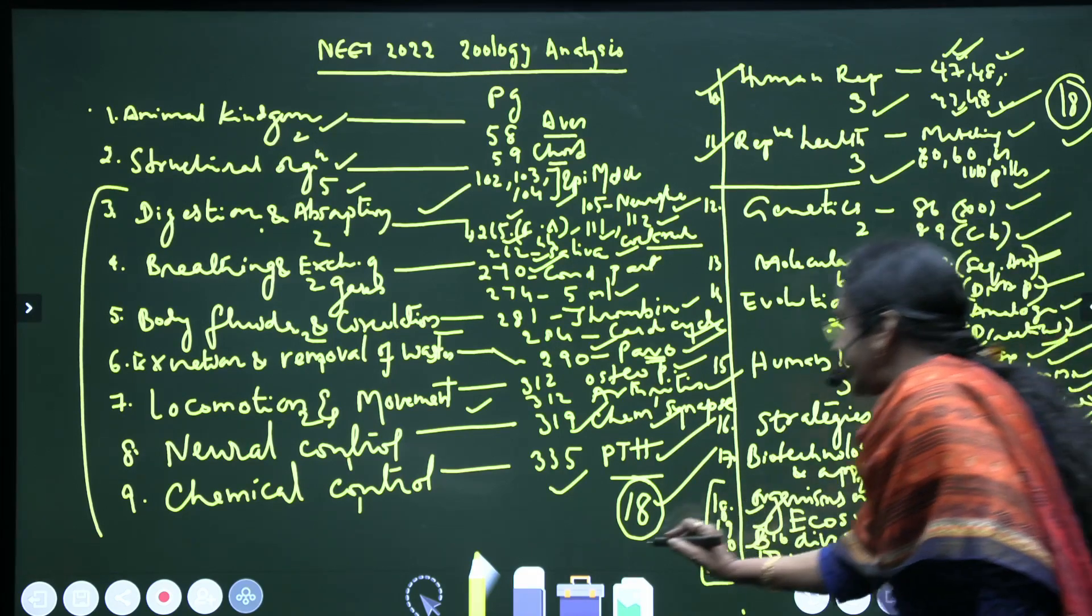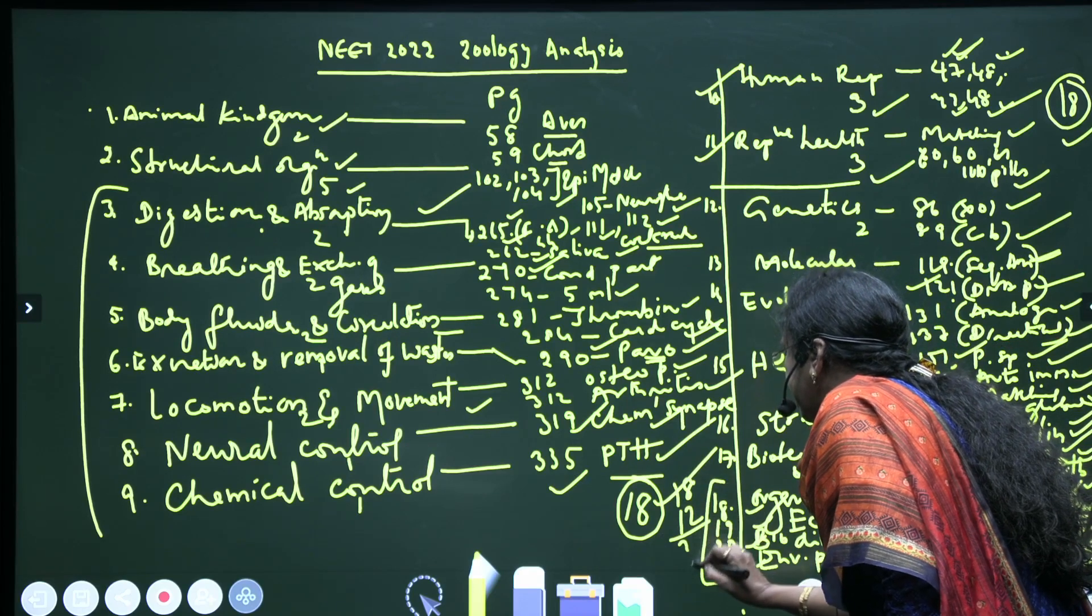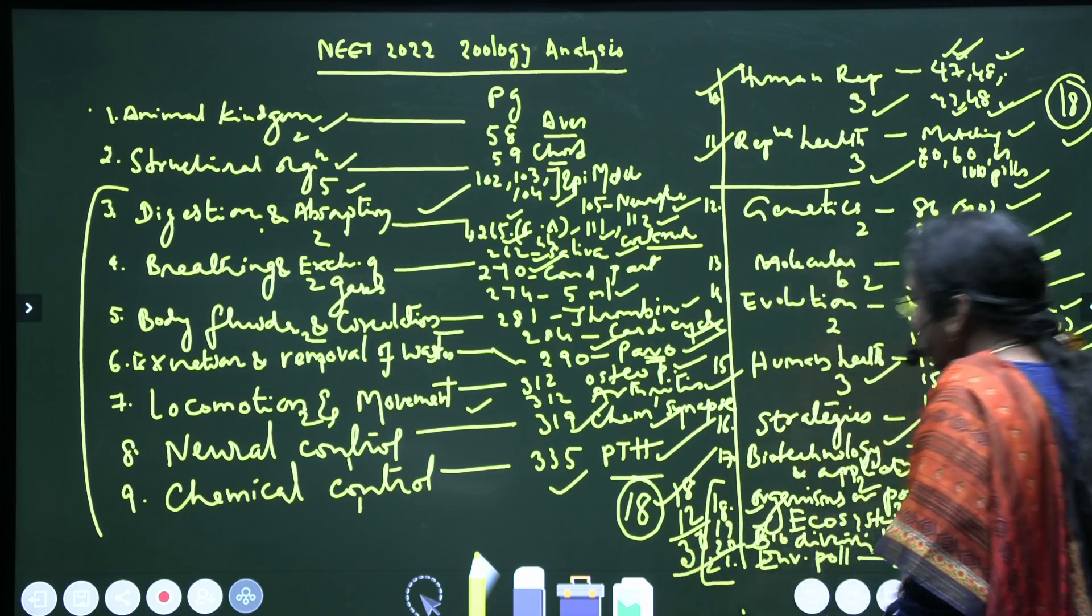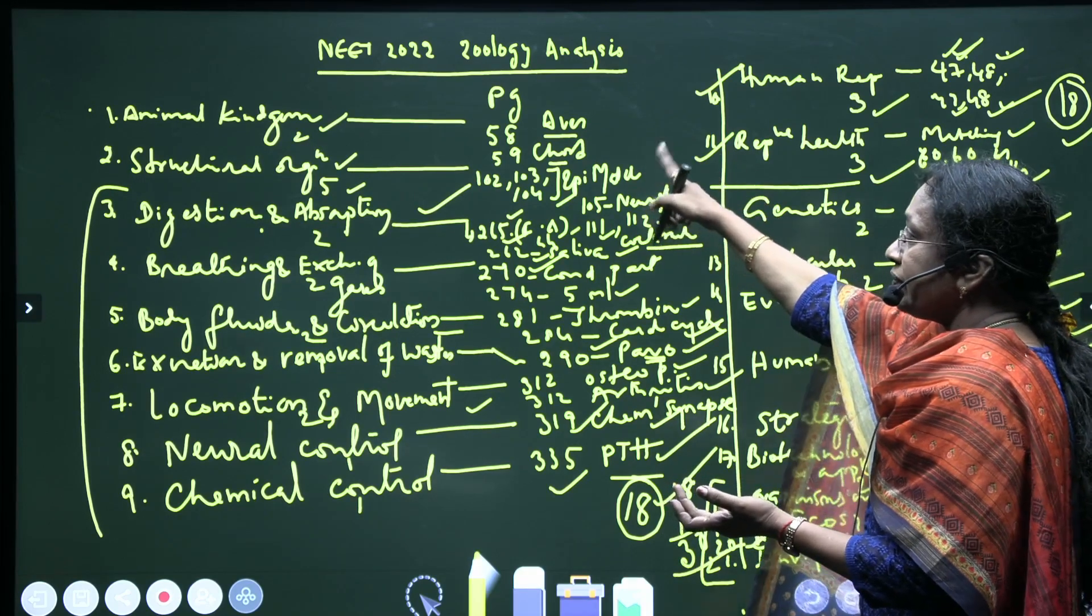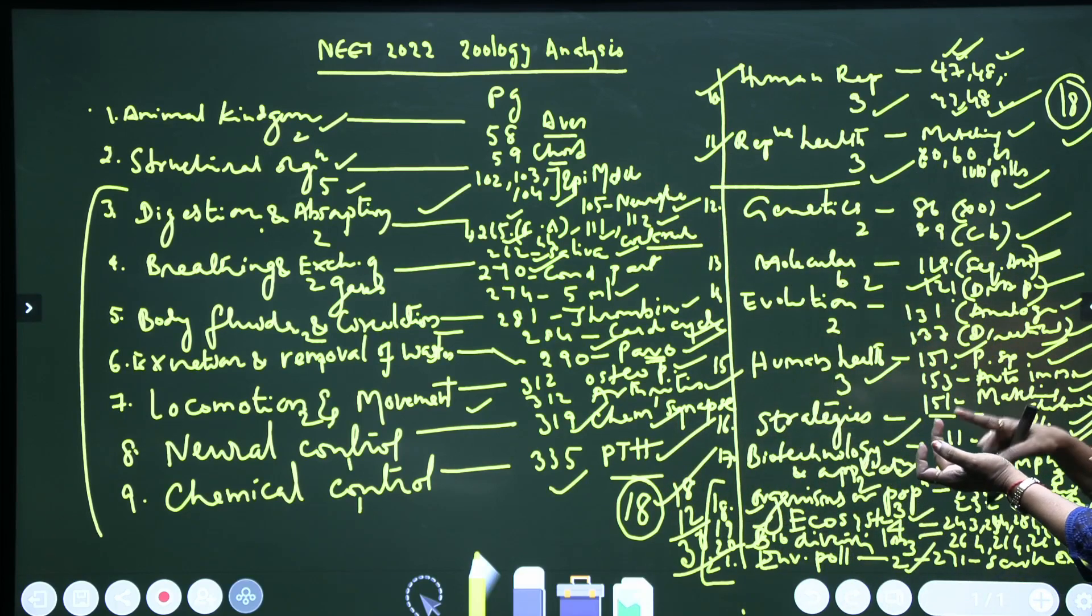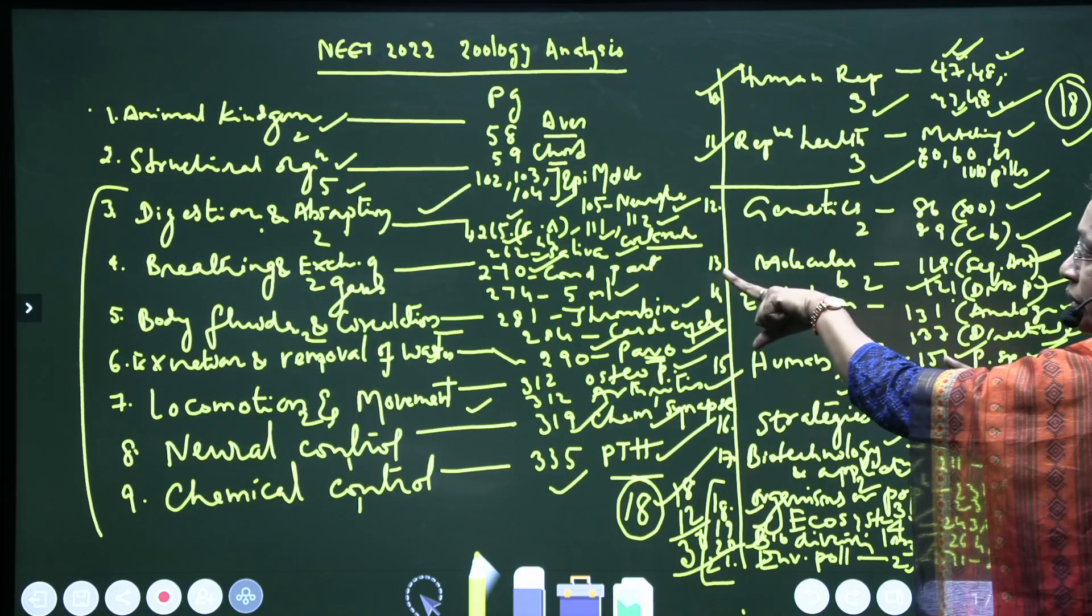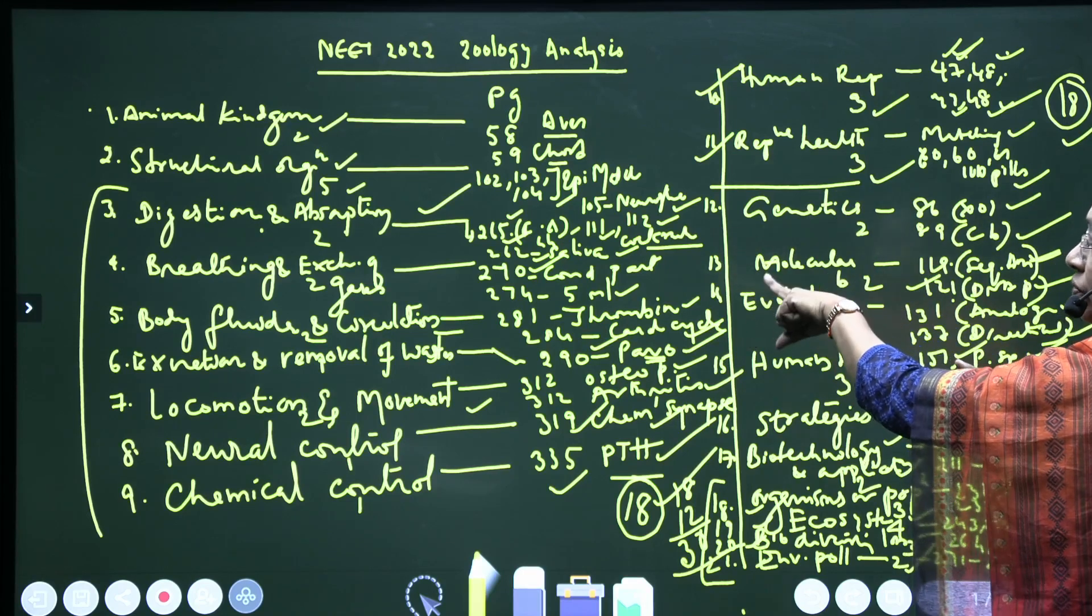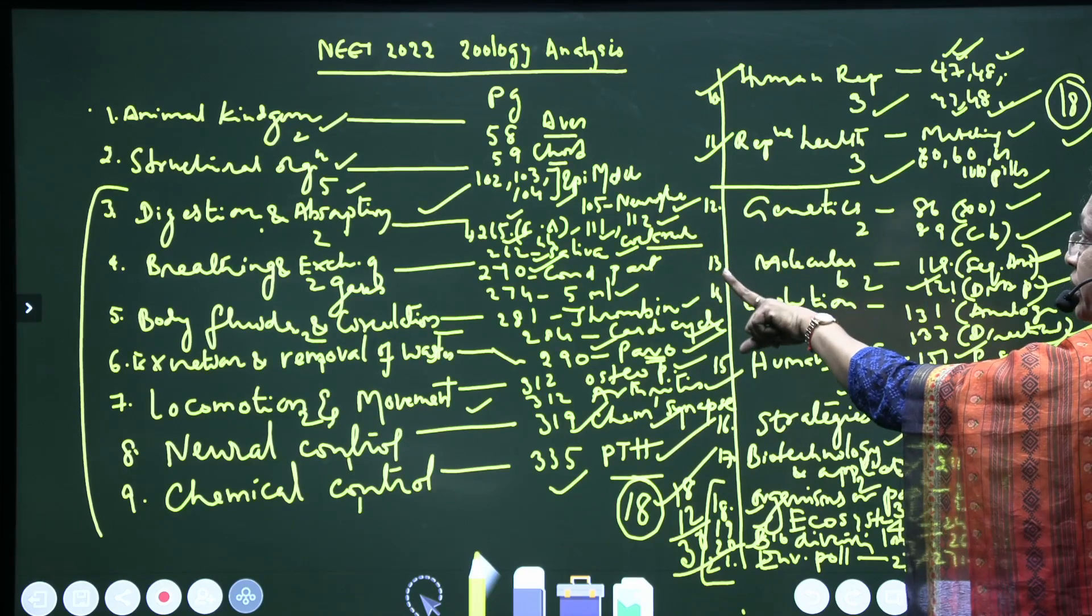And Human Physiology: 30 questions. See how much weight is to Human Physiology and Ecology. And from the first two chapters of the 11th, you will be getting all together six to seven questions. Here Animal Kingdom: only two is given. Structural Organization: five is given. Last year, Animal Kingdom three questions, Structural Organization four questions have been given - six questions altogether.